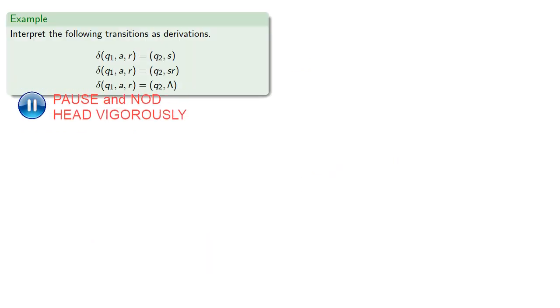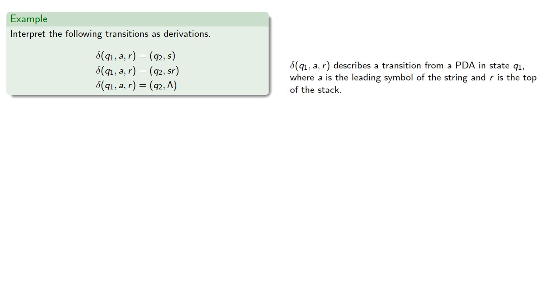So let's try to interpret the following transitions as derivations. So δ(q₁, a, r) describes a transition from a pushdown automaton in state q₁, where a is the leading symbol of the string, and r is the top of the stack. So our pushdown automaton can be described as (q₁, ax, rγ), where x is the remainder of the string being processed, and γ is the remainder of the stack.